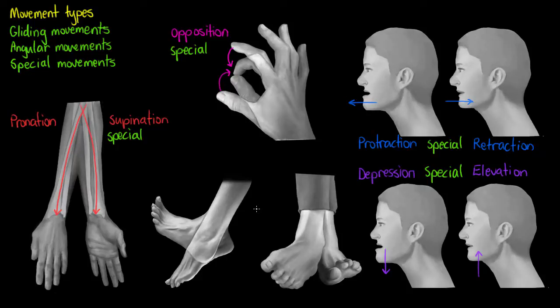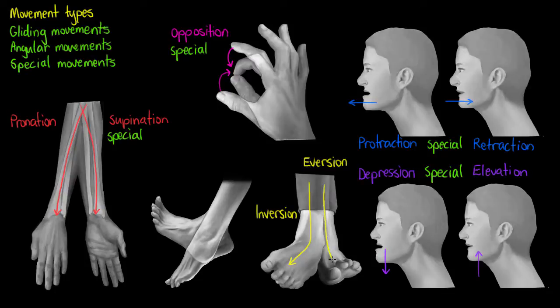Our next movement is exclusive to our foot and is called inversion. It is somewhat similar to the supination and pronation movements of the hand, but because the skeletal structure of our foot is quite different, in inversion we try to turn the sole of our foot upwards medially. In eversion we perform a similar movement except we are rotating the sole upwards in a lateral direction.